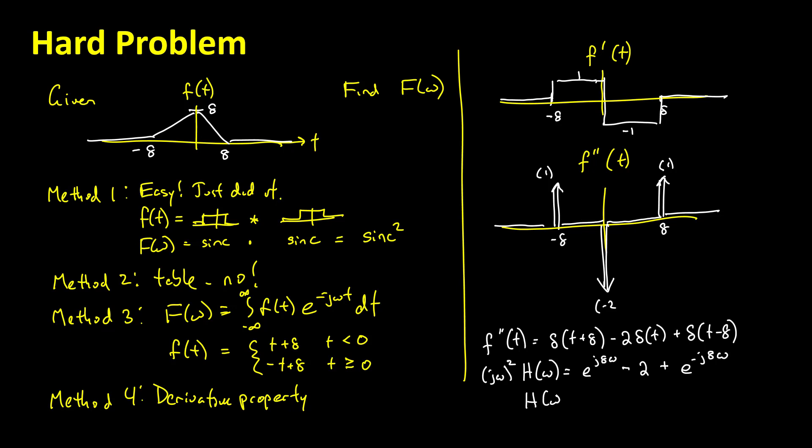And now that we've got this, we can solve for h of omega, which is this divided by j omega squared. j squared is negative 1, so I'll multiply this whole thing through by negative 1 over omega squared. So by dividing it through by this, we'll end up with a 2, I'll bring that in front, minus, and we've got that e to the j 8 omega plus e to the minus j 8 omega, and we have to divide all that by omega squared.